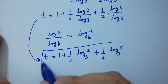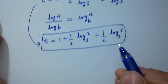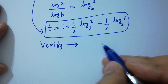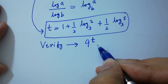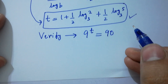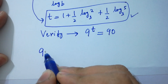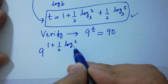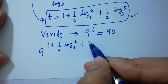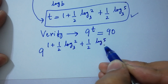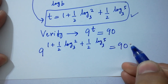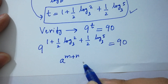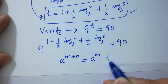Now I'm going to verify: 9 to the power t equals 90. Put the value of t: 9 to the power of 1 plus half log 2 to the base 3 plus half log 5 to the base 3 equals 90. Using a to the power m plus n equals a to the power m times a to the power n.